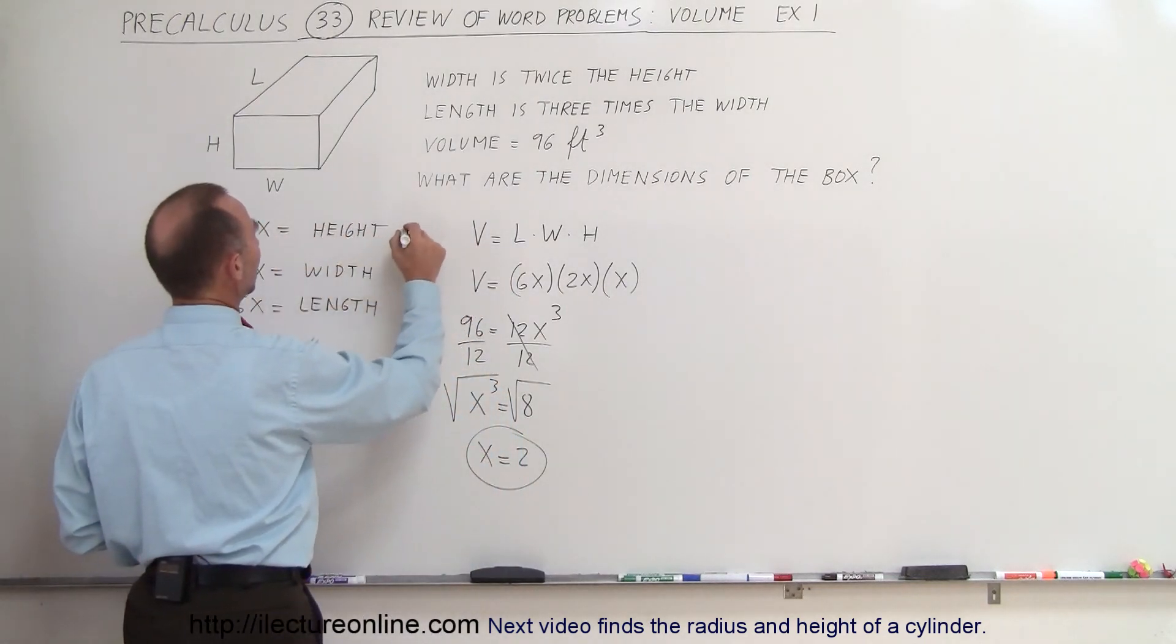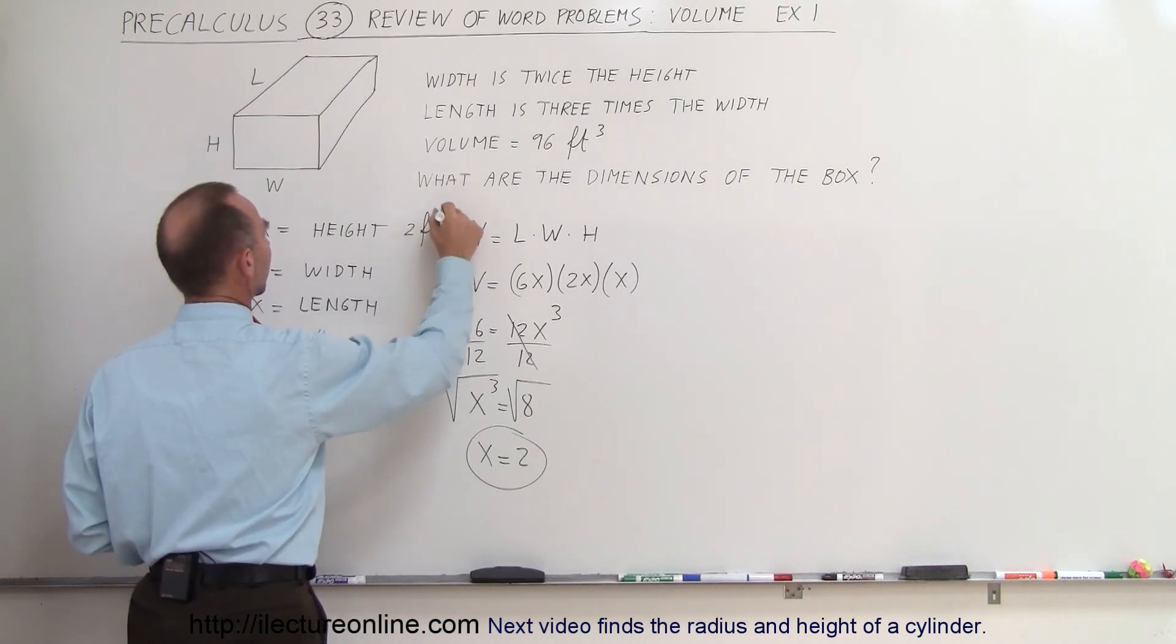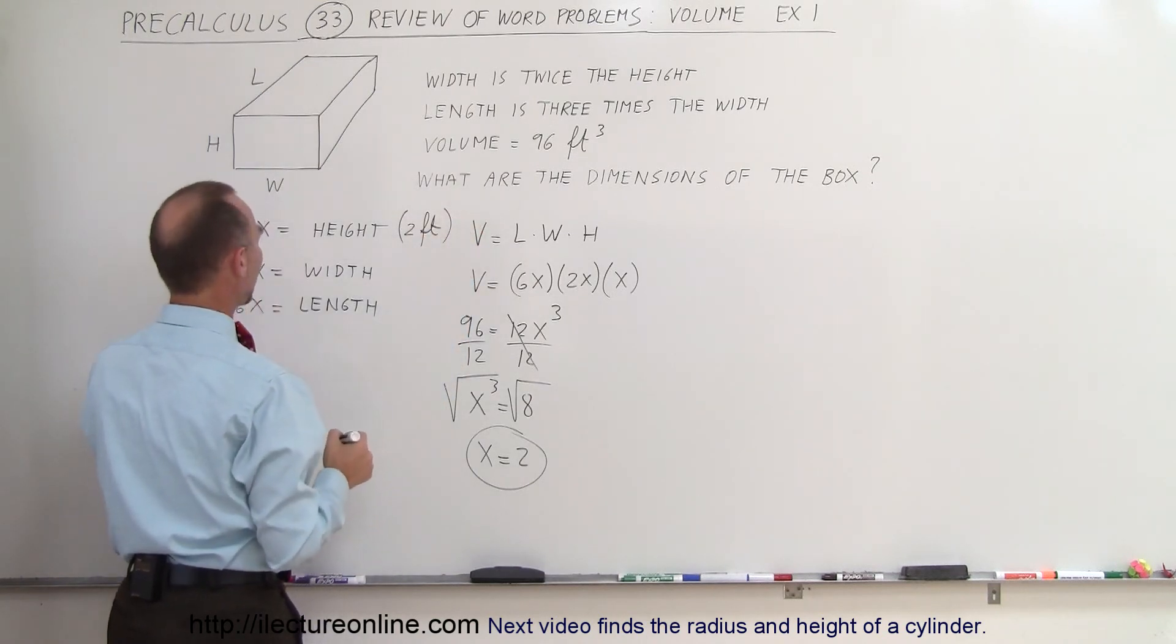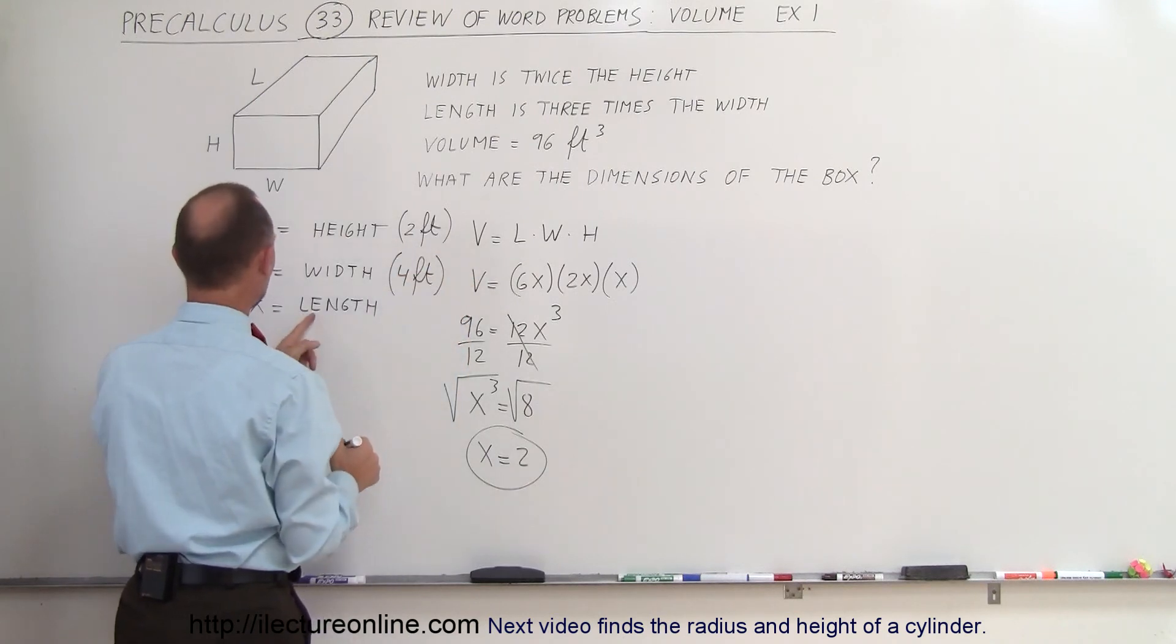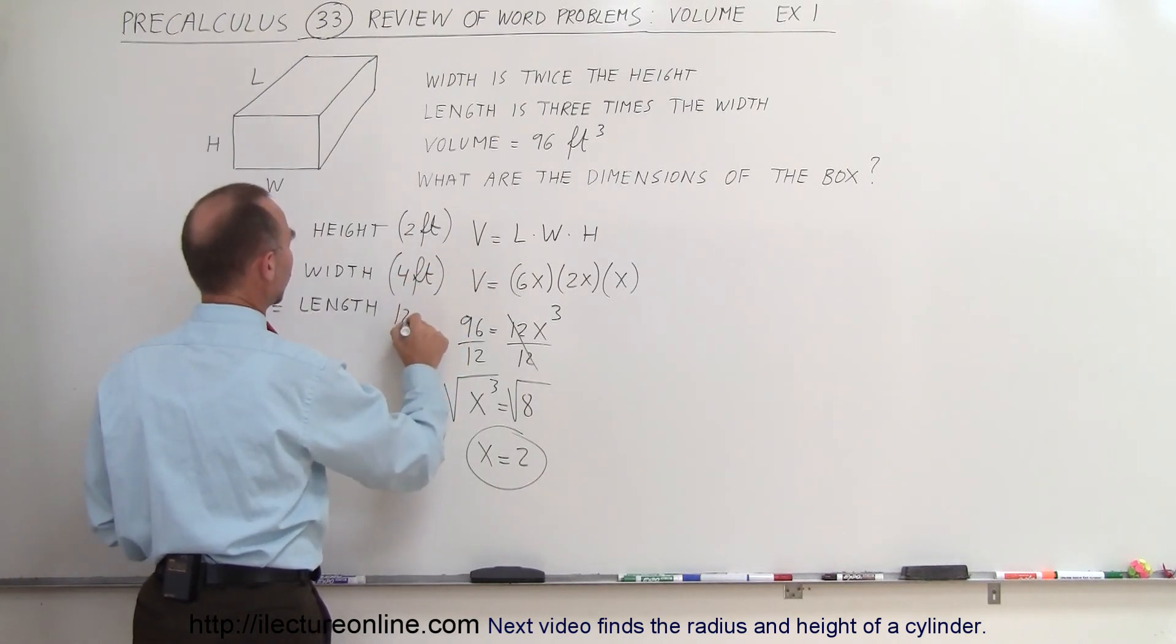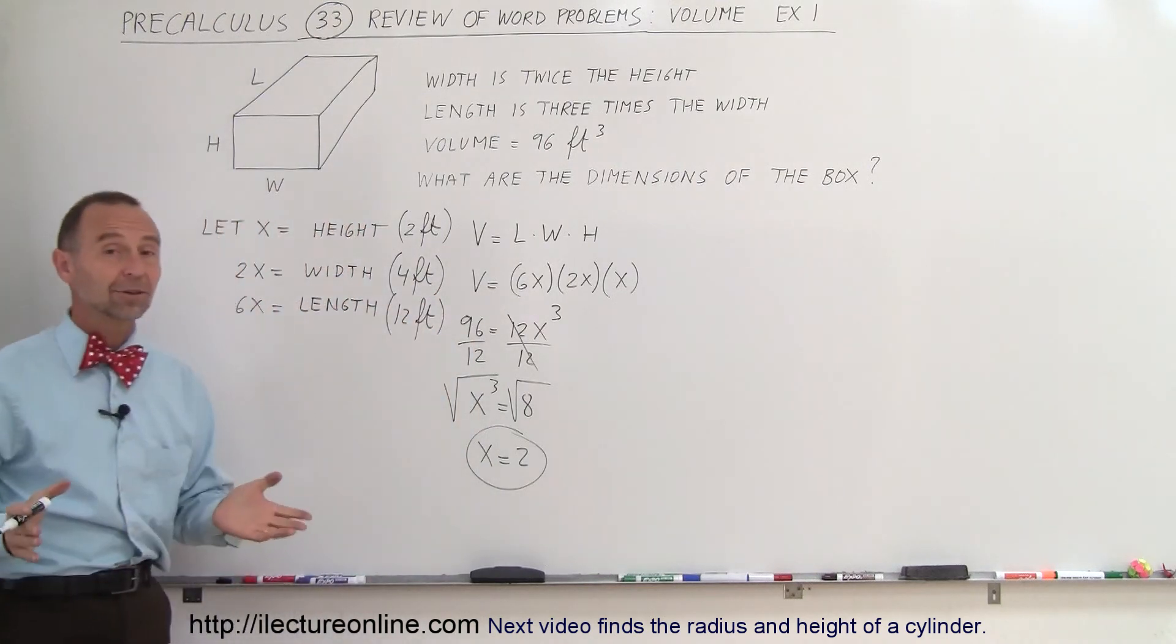Let me say that x, the height, must be 2 feet. The width, which is twice that much, must be 4 feet, and the length, which is 6 times that much, must be 12 feet, and those then become the dimensions of the box. So that's how we do that.